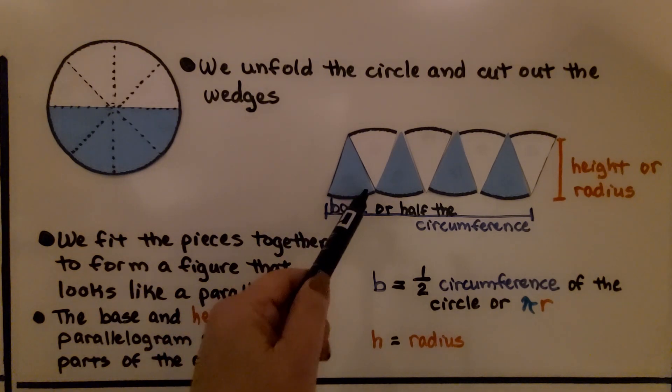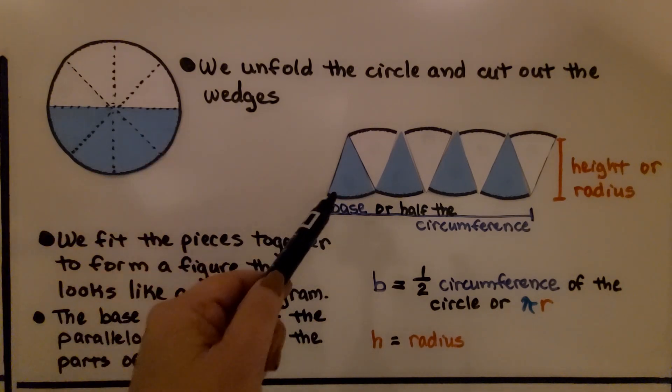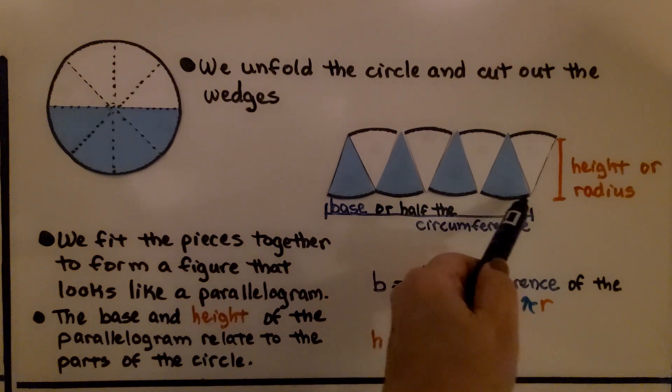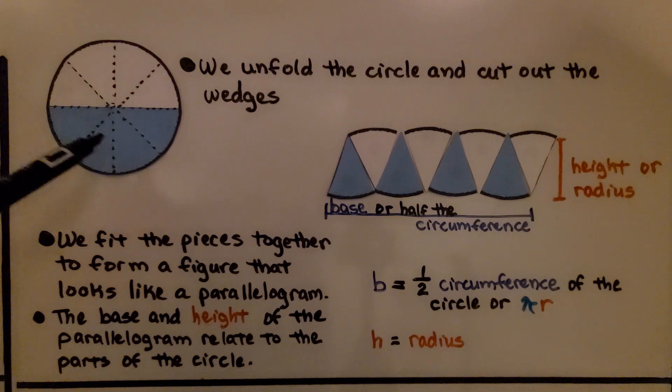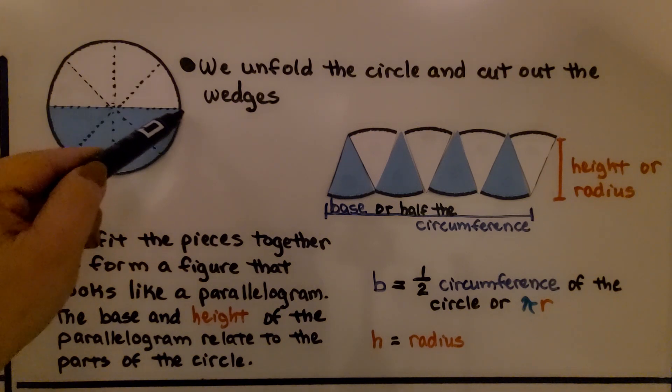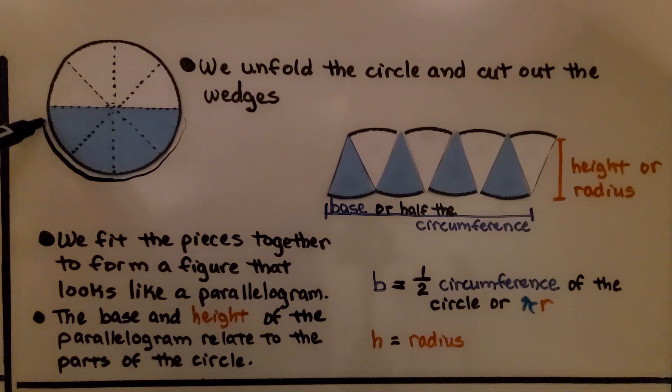So we can see this is the edge of the circle, isn't it? It's part of the circumference and see how it's coming all across the bottom here? So that's half the circumference. One, two, three, four wedge pieces. This is half of the circumference.